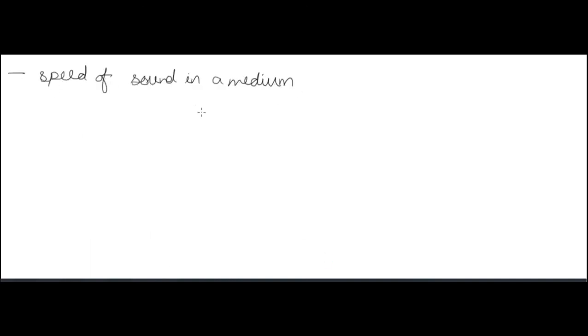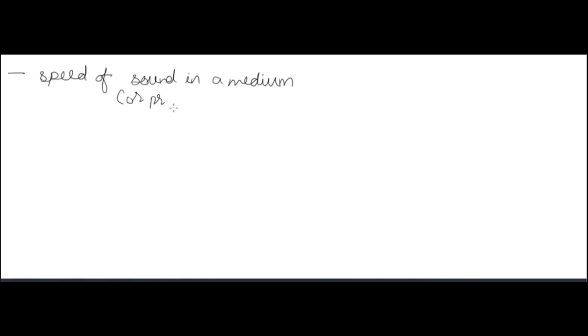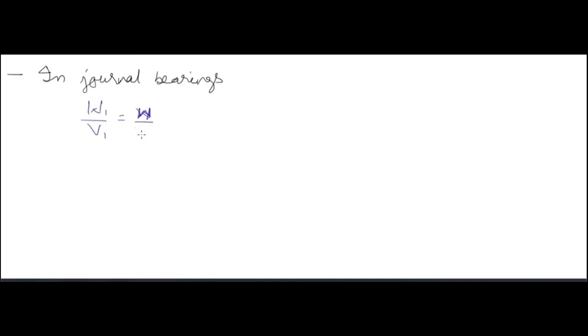Speed of sound in any medium: sound is a pressure wave, so speed of sound = √(K/ρ), where K is bulk modulus and ρ is density. Additionally, in journal bearings (related to fluid), the product of weight and velocity is constant — this is covered in machine design. That concludes this fluid mechanics introduction.